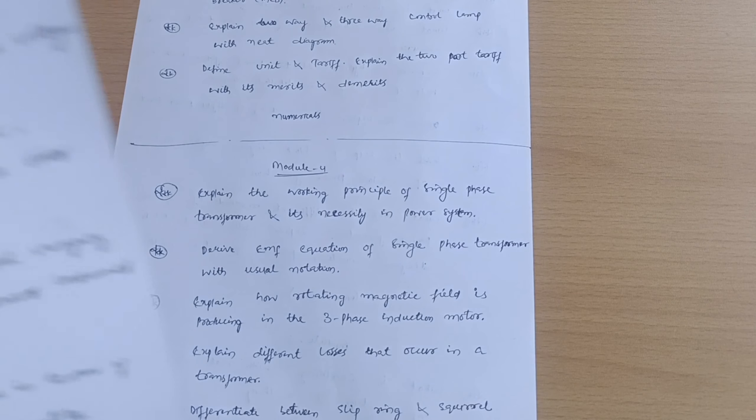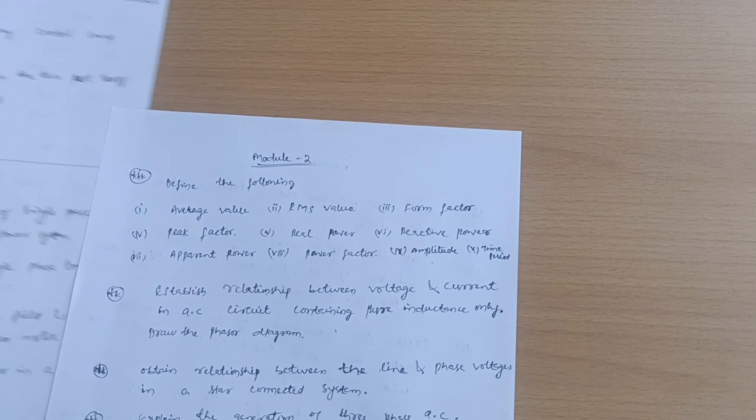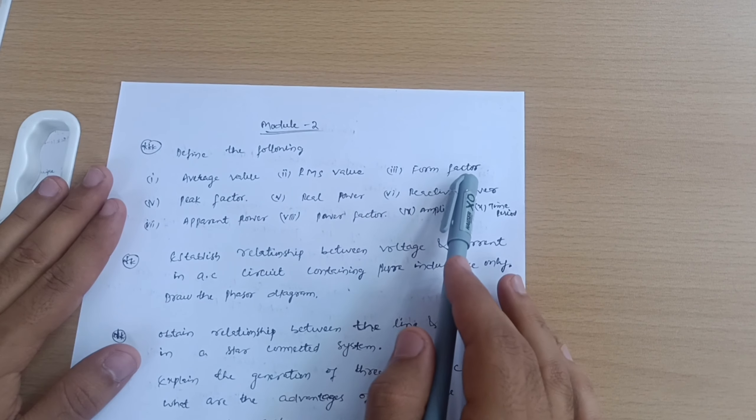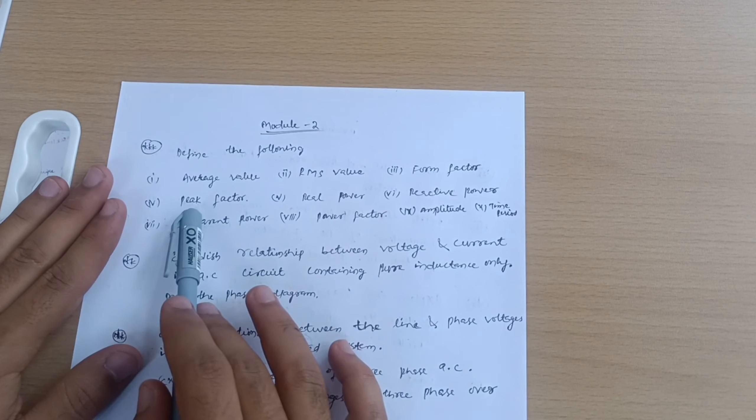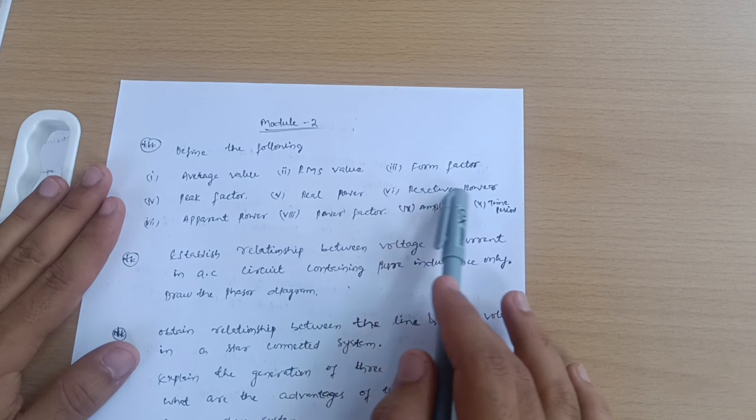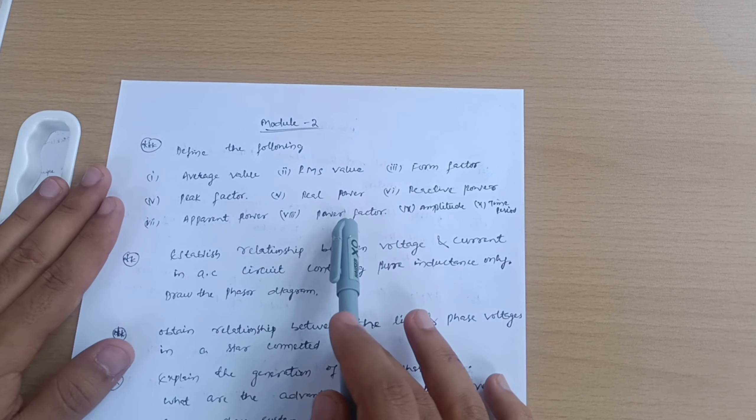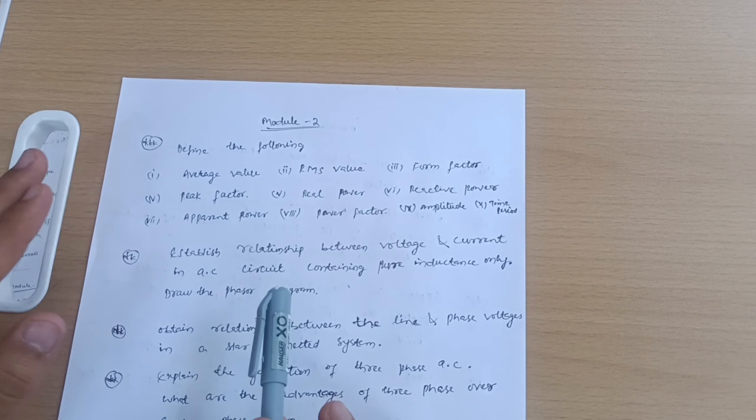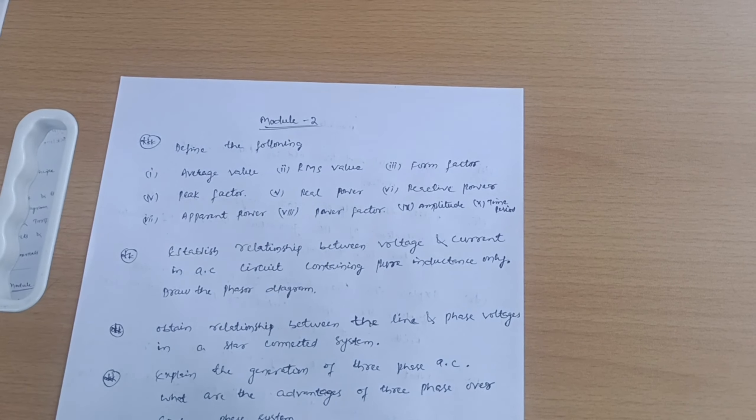Let's come to Module 2. You have to cover some one line or two line definitions like average value, RMS value, form factor, peak factor, real power, reactive power, apparent power, and power factor, amplitude and time period. These are 10 simple definitions which you should remember.